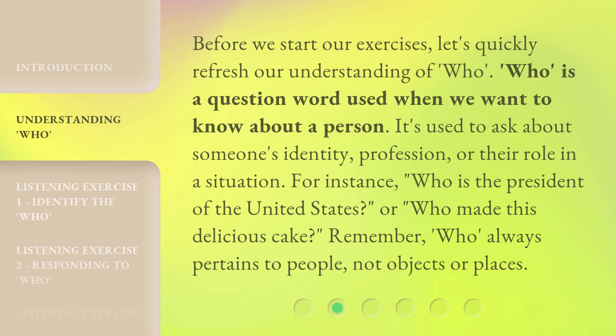Before we start our exercises, let's quickly refresh our understanding of who. Who is a question word used when we want to know about a person. It's used to ask about someone's identity, profession, or their role in a situation. For instance, who is the president of the United States, or who made this delicious cake. Remember, who always pertains to people, not objects or places.